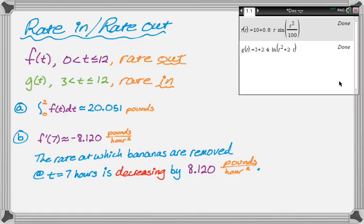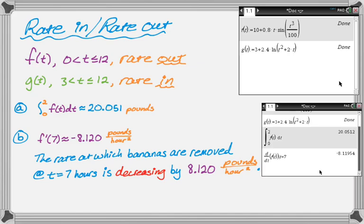The next question is, is the number of pounds of bananas on the display table increasing or decreasing at time t equals 5? And then we need to give a reason. I'm showing you my calculator here. I forgot that I did that. So you can see I just punched in everything and took the answers that it gave me.